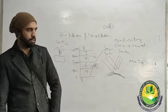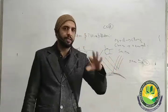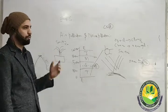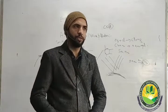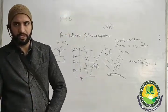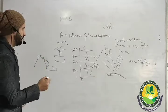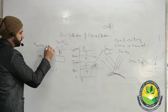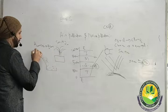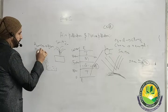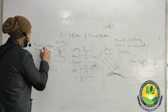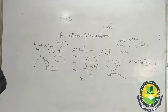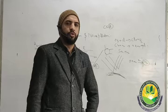Another effect of air pollution is acid rain. We have SO2 and NO2 in the atmosphere. When SO2 and NO2 react with water during precipitation, water reacts with SO2 to form H2SO4 (sulfuric acid) and with NO2 to form HNO3 (nitric acid). Therefore, acid rain is formed.